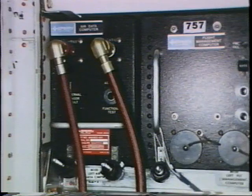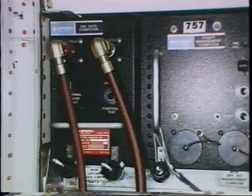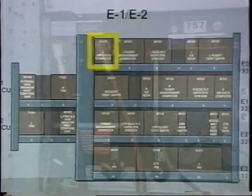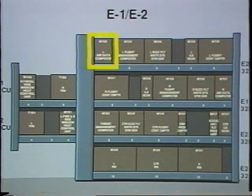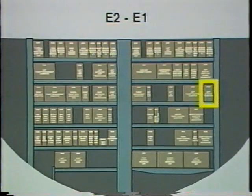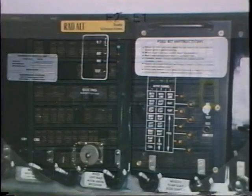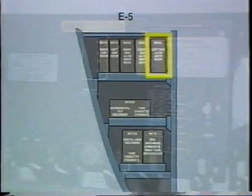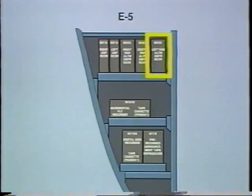The left air data computer supplies computed airspeed, barometric altitude, and barometric altitude rate. It is on the E2 rack on the 757 and on the E1 rack on the 767. The left radio altimeter supplies radio altitude. It is on the E5 rack for both the 757 and the 767.